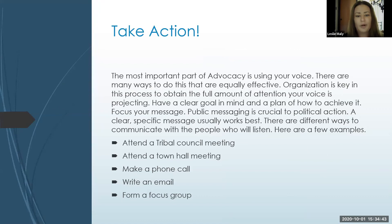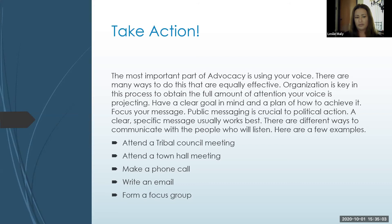The most important part of advocacy is using your voice. There are many ways to do this that are equally effective. Organization is key in this process to obtain the full amount of attention your voice is projecting. Have a clear goal in mind and a plan of how to achieve it. Focus your message — public messaging is crucial to political action. A clear, specific message usually works best. Ways to communicate include attending a tribal council meeting, attending a town hall meeting, making phone calls, writing emails, or forming a focus group with people of like mind.